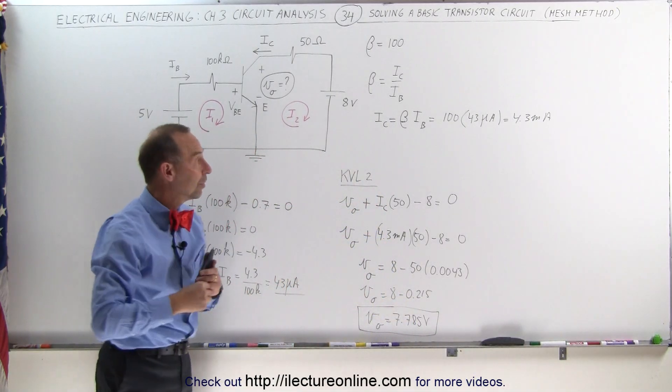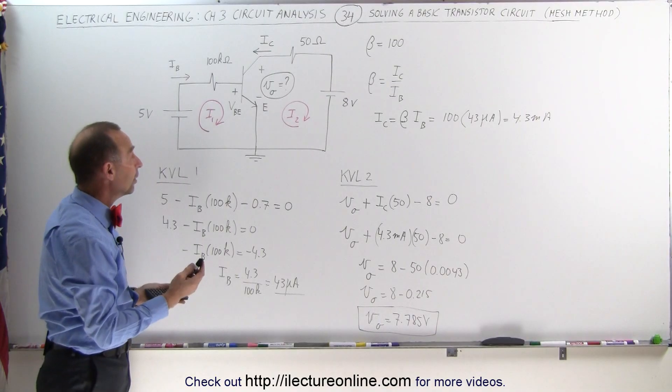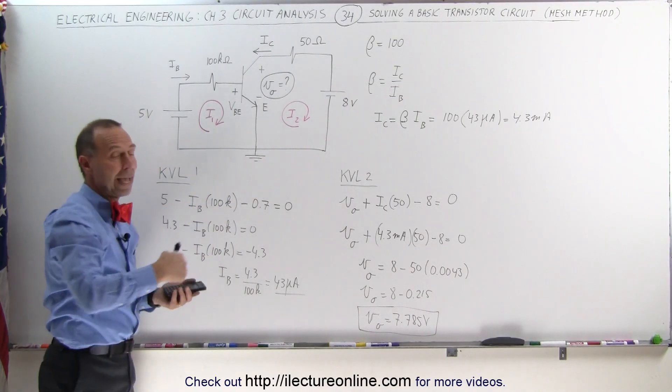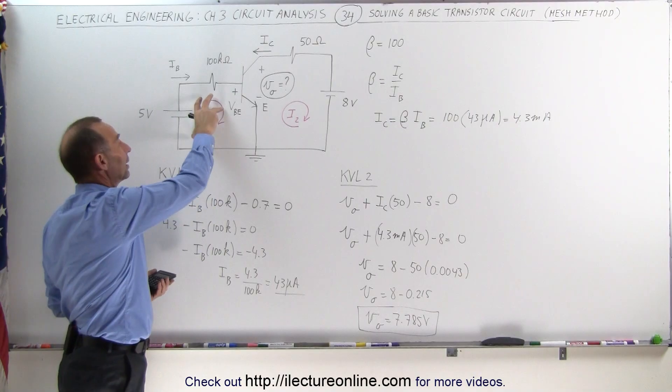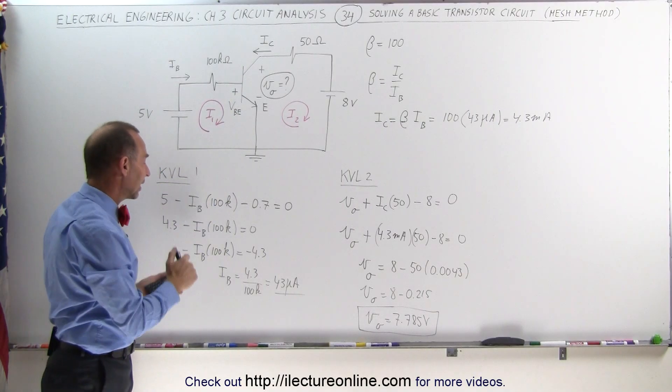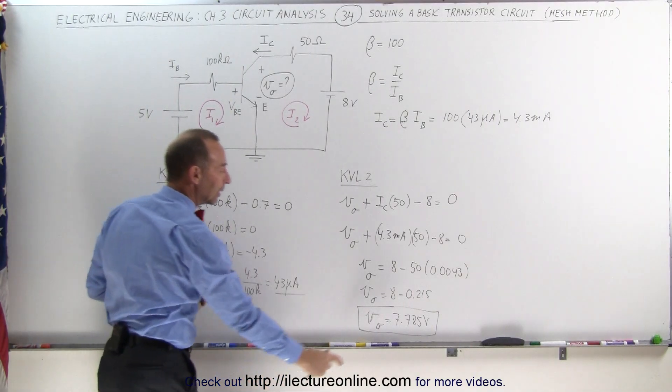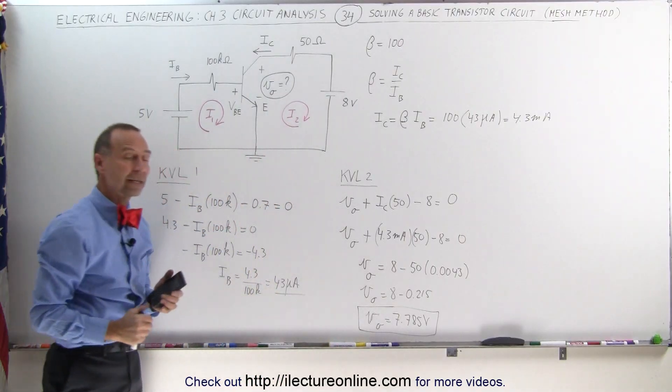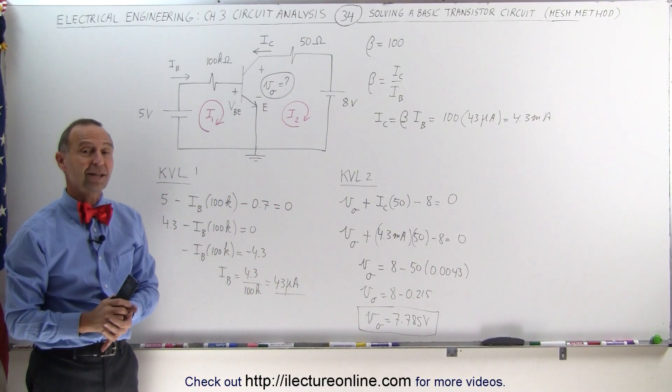And that's how we use the methodologies that we learned before, in this case the mesh method, by going around each loop, adding up all the voltages, calculating the current in each case. We can then calculate the base current, and we can calculate the voltage between the collector and the emitter. And that's how that's done.